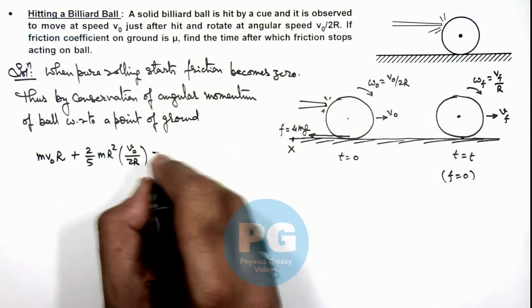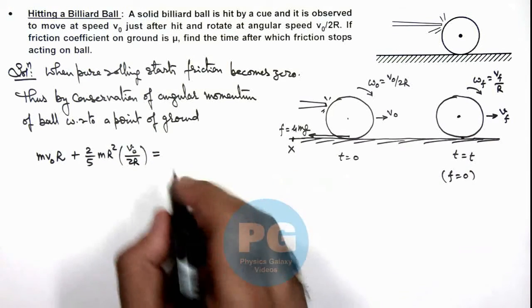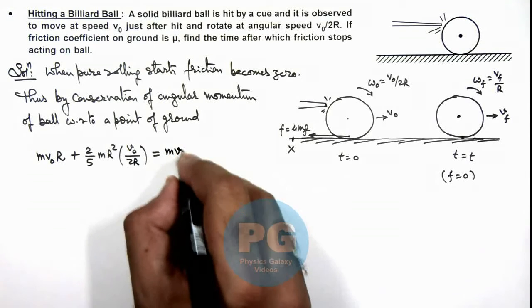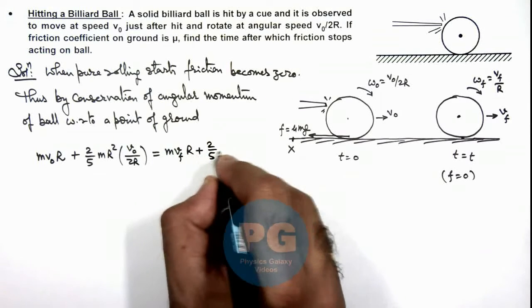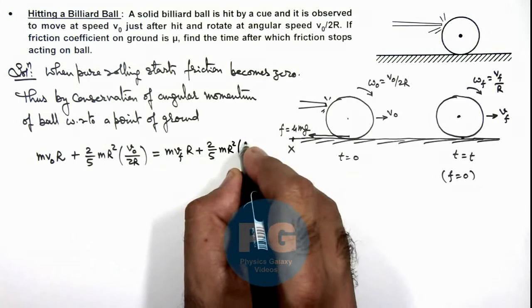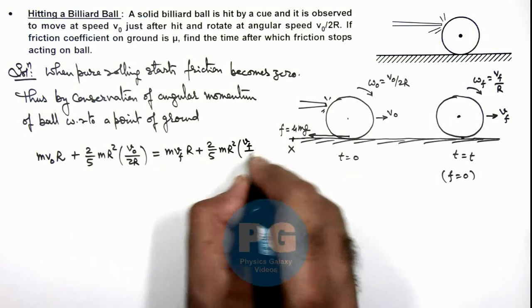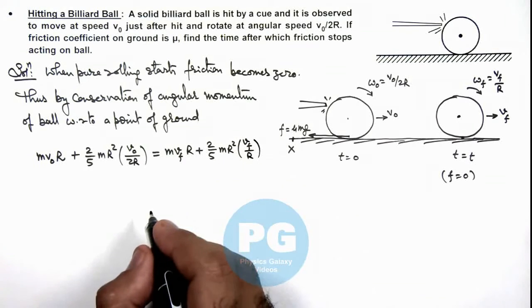This should be equal to the final angular momentum, which we can write as mvf·r plus (2/5)mr² multiplied by vf/r.